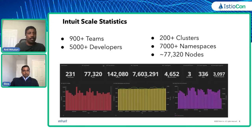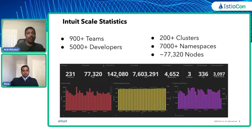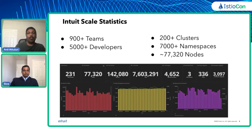A little bit of statistics about the scale at which we operate. We have around 900 plus teams that host 5,000 or more developers, and we have 200 plus Kubernetes clusters that host more than 7,000 namespaces. At peak traffic, we use around 77,000 underlying EC2 compute nodes. All these 200 plus clusters run Istio and form the multi-cluster service mesh, and they are all upgraded on a regular basis every month.